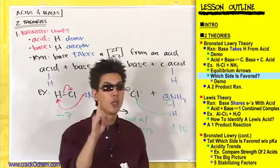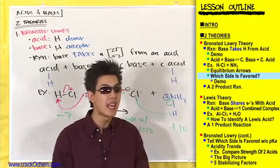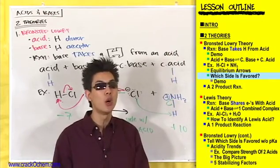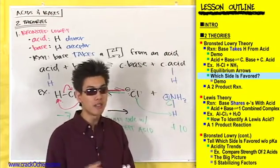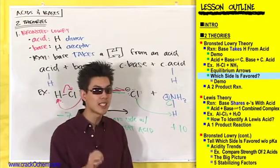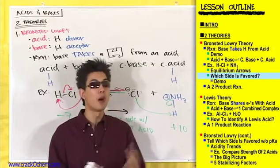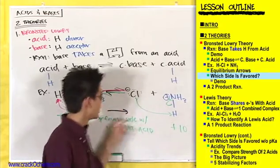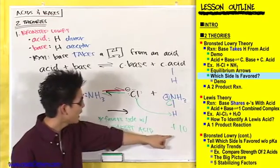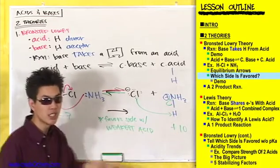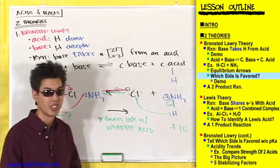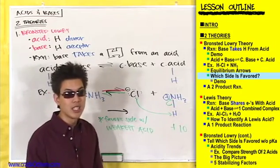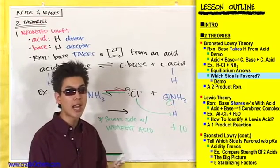But you really only need to focus on pKa. The side with the higher, more positive pKa — the weaker acid — is the one that's favored. So if the reaction favors the side with the weaker acid and a higher pKa means weaker, then the right side where NH4+ has a pKa of positive 10 is favored over the left side where HCl has a pKa of negative 7. It's going to be favored to the right, towards the side with the weaker acid.